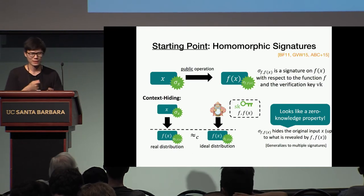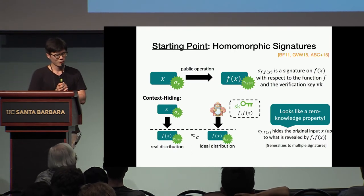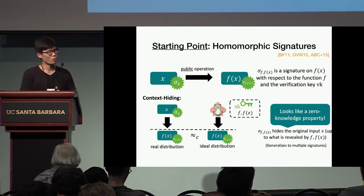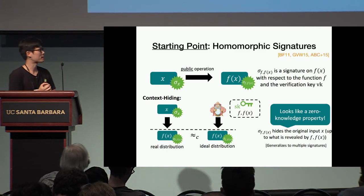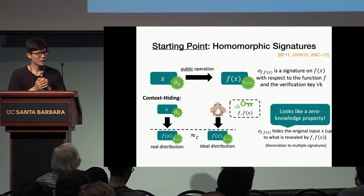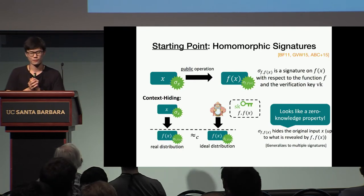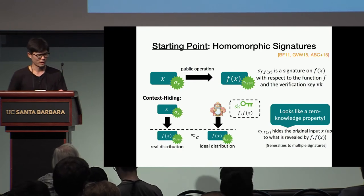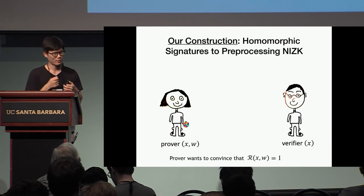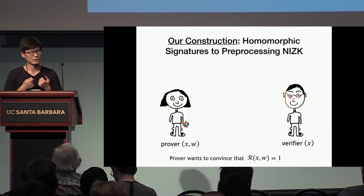If you look at this context hiding security definition, it kind of looks like a zero-knowledge property. Context hiding allows you to simulate the output of some computation without actually knowing the inputs, which is reminiscent of zero-knowledge. So it seems like a homomorphic signature scheme satisfying context hiding security should be able to give some sort of a zero-knowledge protocol — and this indeed turns out to be the case.